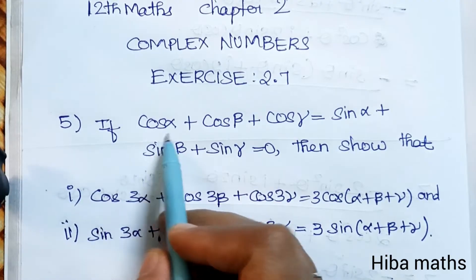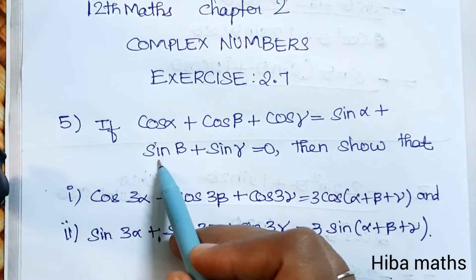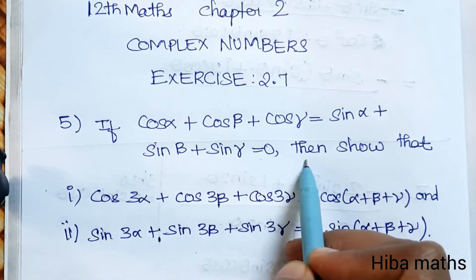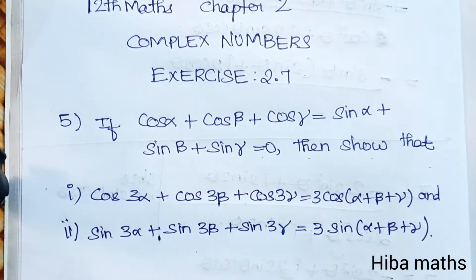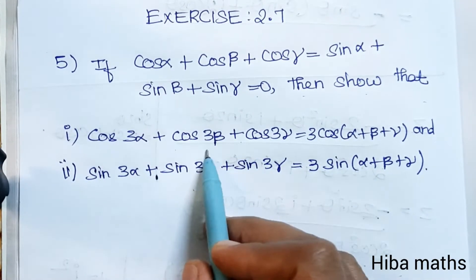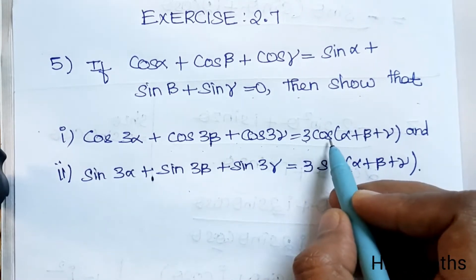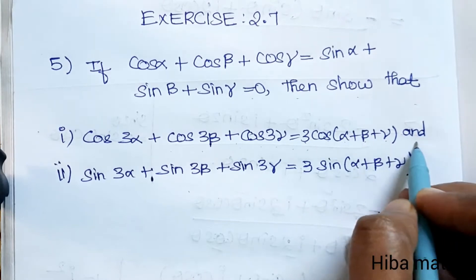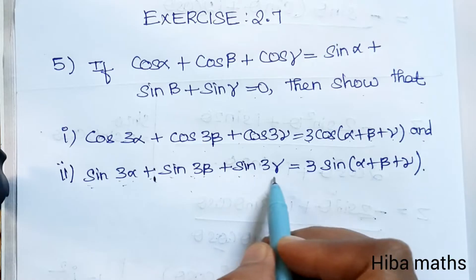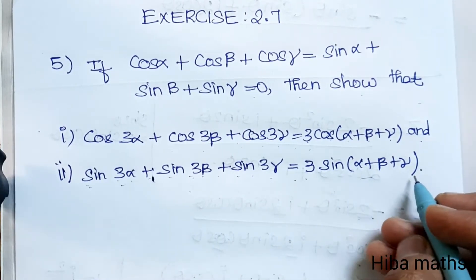If cos α + cos β + cos γ = 0 and sin α + sin β + sin γ = 0, then show that: cos 3α + cos 3β + cos 3γ = 3·cos(α+β+γ), and sin 3α + sin 3β + sin 3γ = 3·sin(α+β+γ).